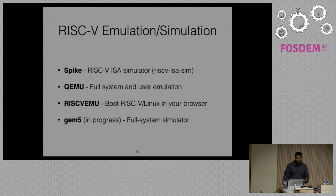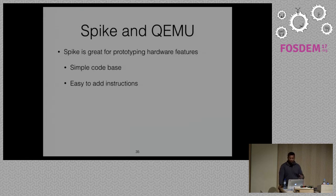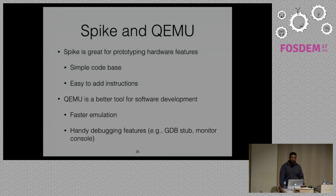Spike is great for prototyping hardware features — it has a small, simple code base making it easy to add instructions and customize the ISA. But for software work, QEMU is probably a better option: the emulation is faster, it has handy debugging features and better device support. There are a few rough edges in QEMU RISC-V right now, especially with device support, but we hope to iron those out fairly soon.